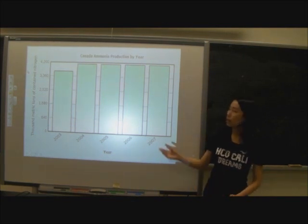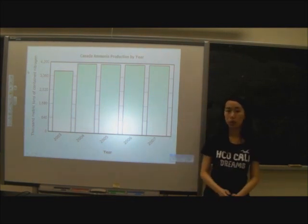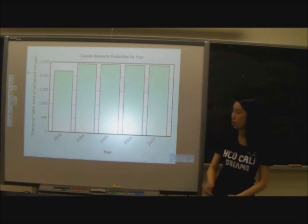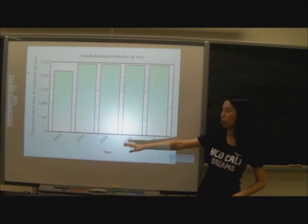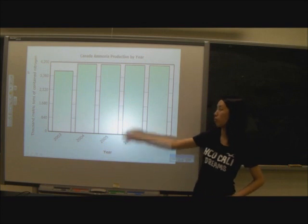Here is a graph that shows Canada's ammonia production from 2003 to 2007. As you can see, there has been a significant increase from 2003 to 2004.